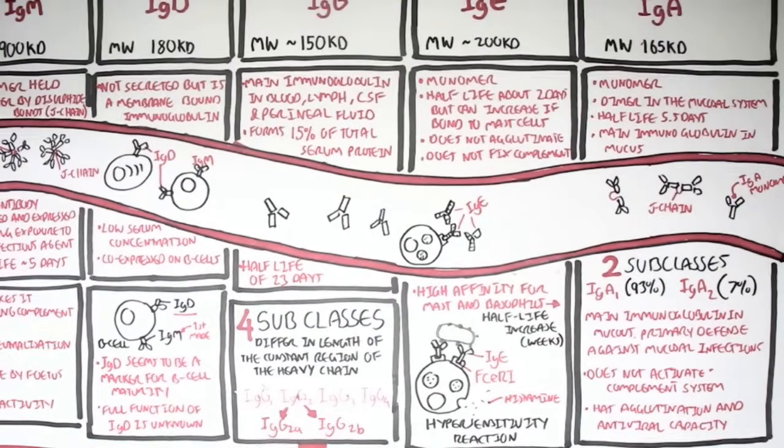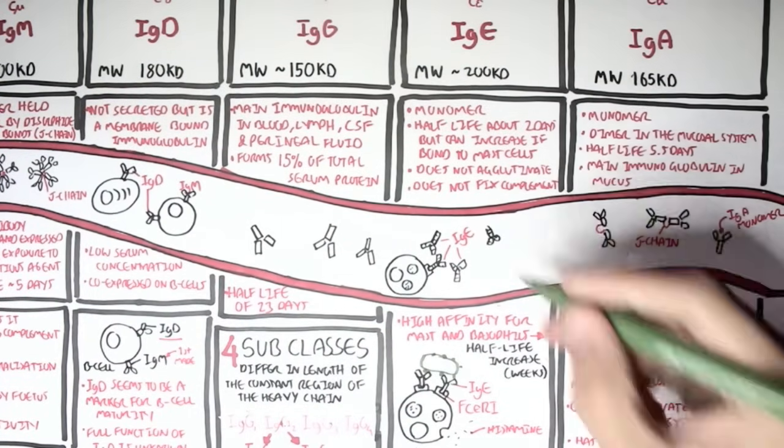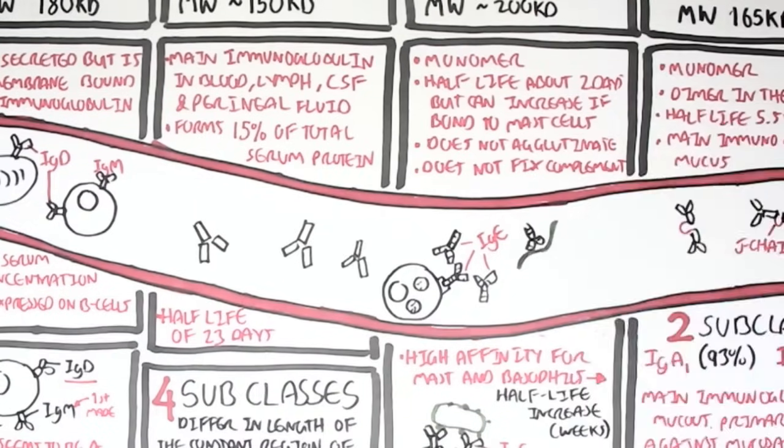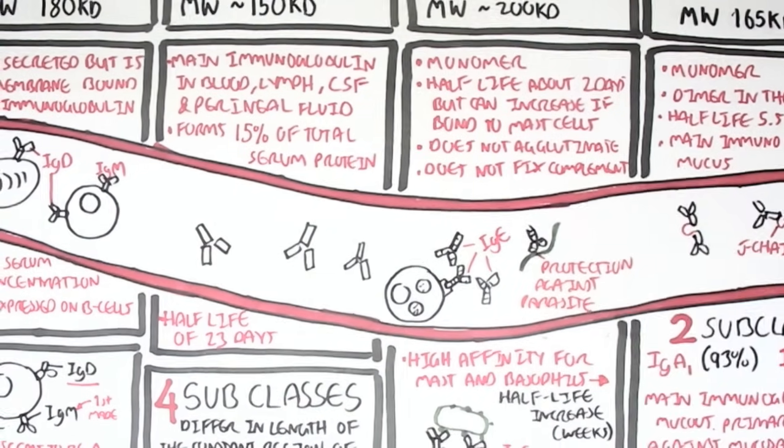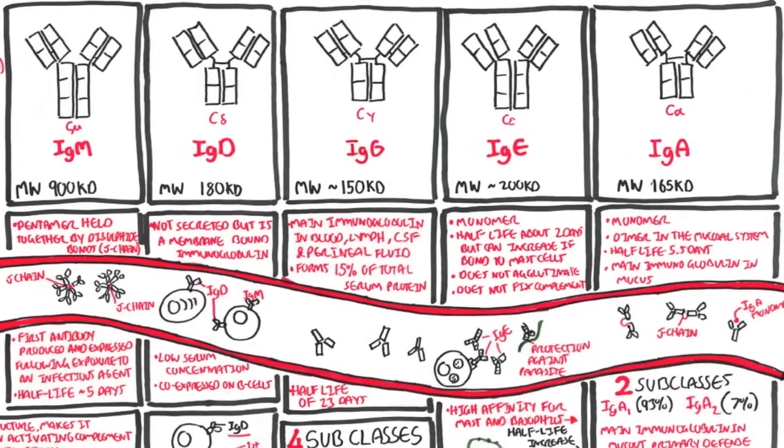So that was for IgA. I actually forgot to mention something about IgE, in that IgE has some form of function in protection against parasites, such as worms.